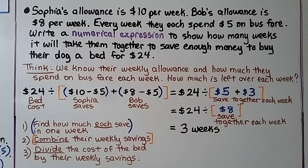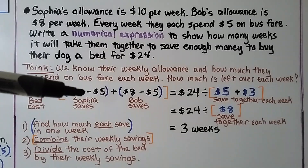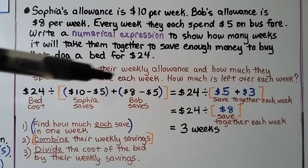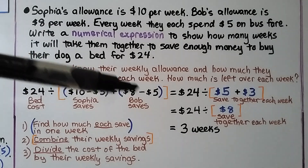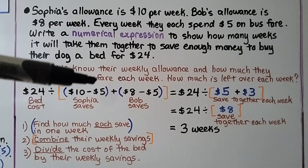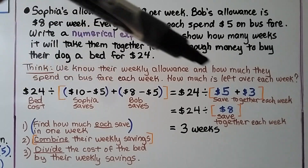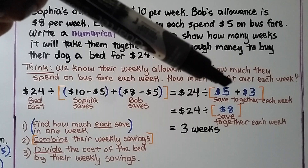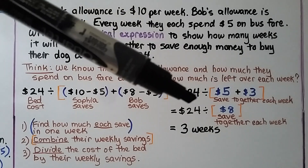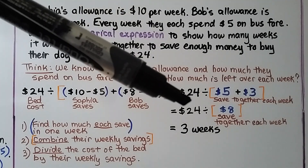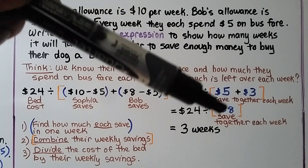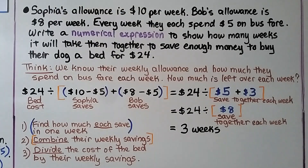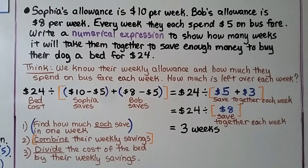First we find how much each person saves in one week. Then we combine their weekly savings in the brackets. Then we divide the cost of the bed by their combined weekly savings, and we know it will take them three weeks.